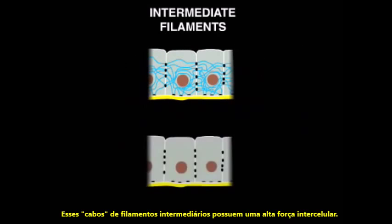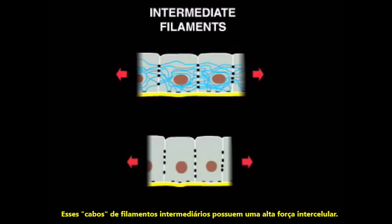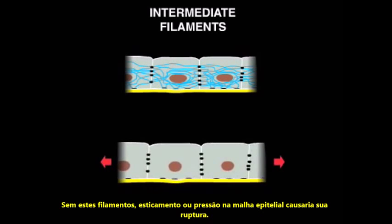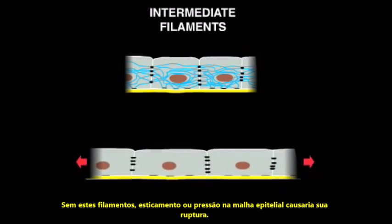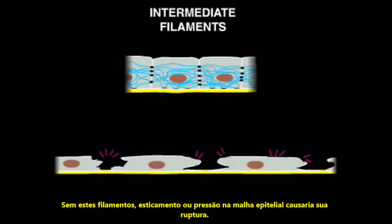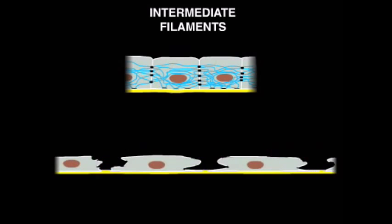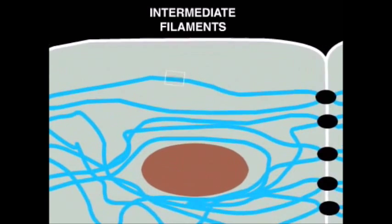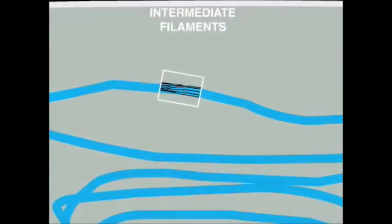These cables of intermediate filaments have a high tensile strength. Without these filaments, stretching or pressure on the epithelial sheet would cause it to rupture.